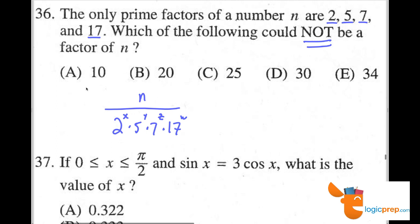So, 10 is 2 times 5 — that definitely could have been a factor. 20 is 2 squared times 5 — that could have worked. 25 is 5 squared — that definitely works as well. Here's 30, though.